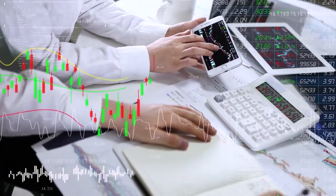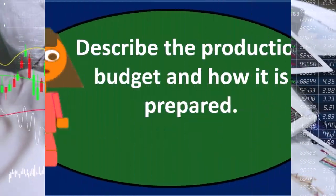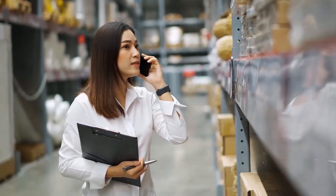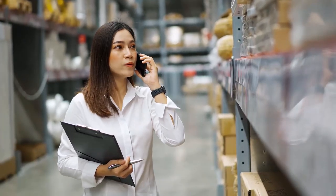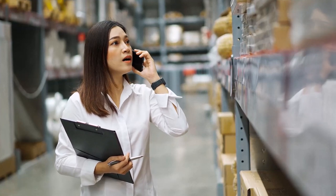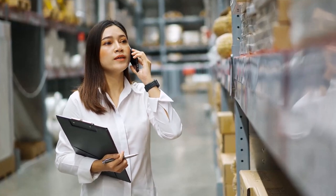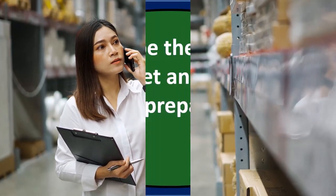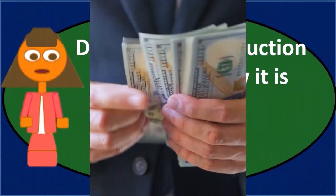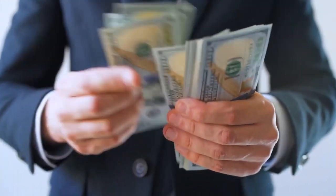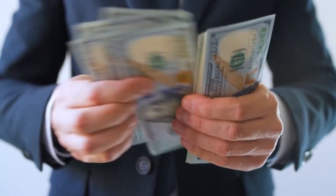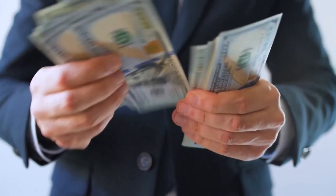Remember, we're thinking about producing items. We have inventory that we're typically considering in this master budget process. The production budget is about the production of inventory, and it is typically going to be in units — we're trying to decide how many units we're going to produce.